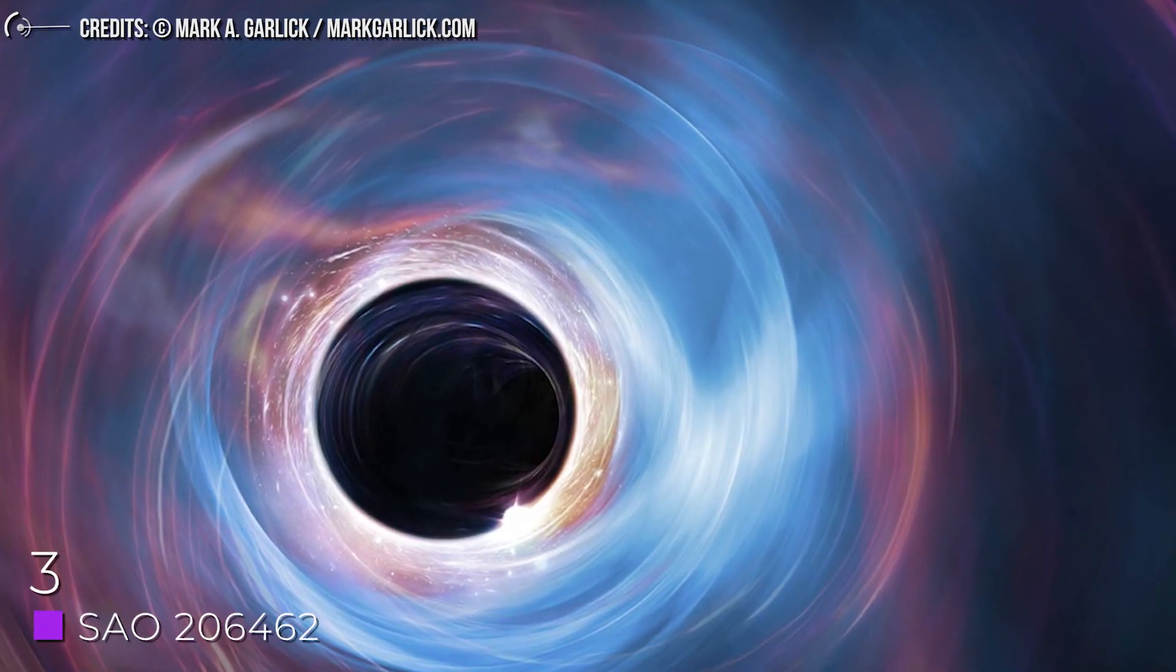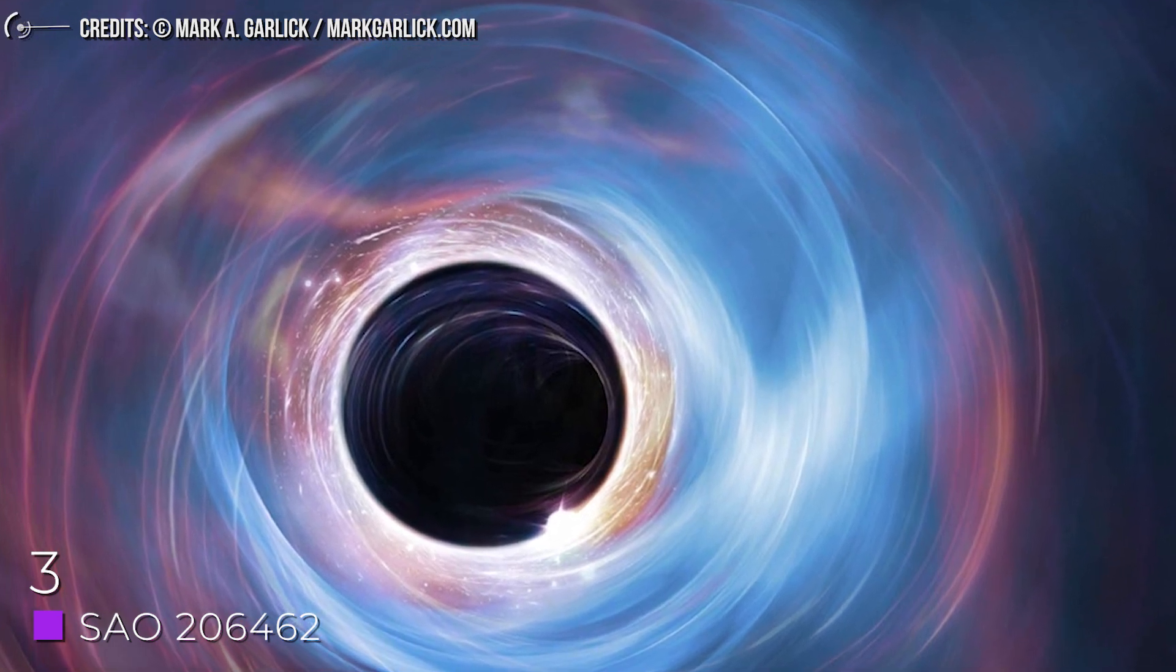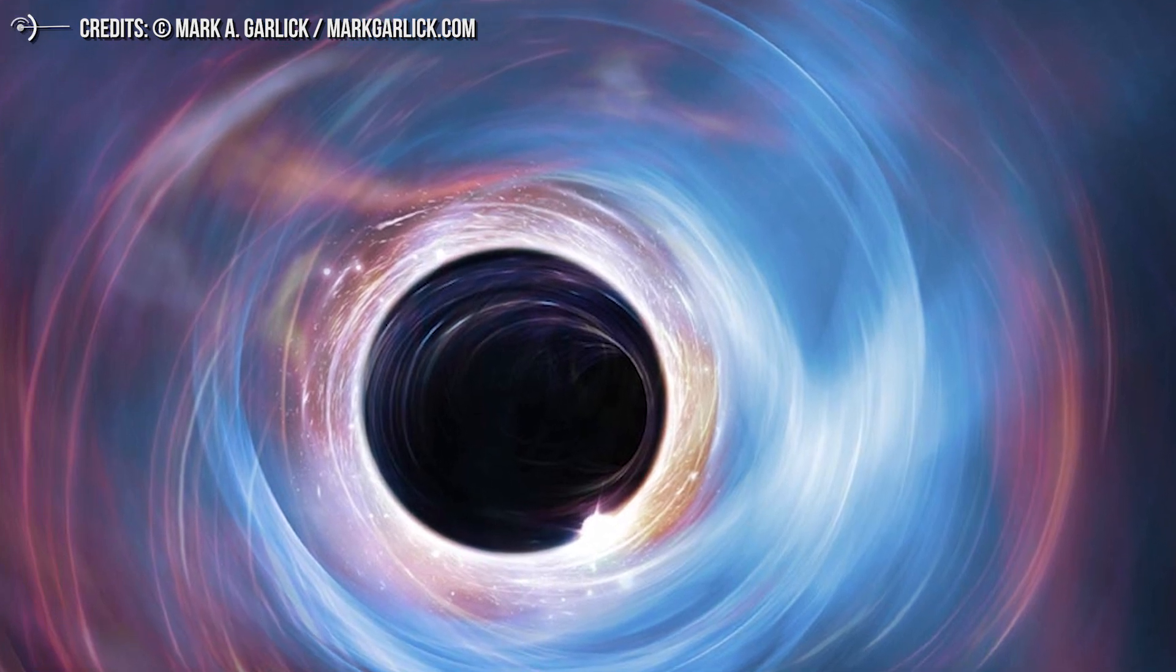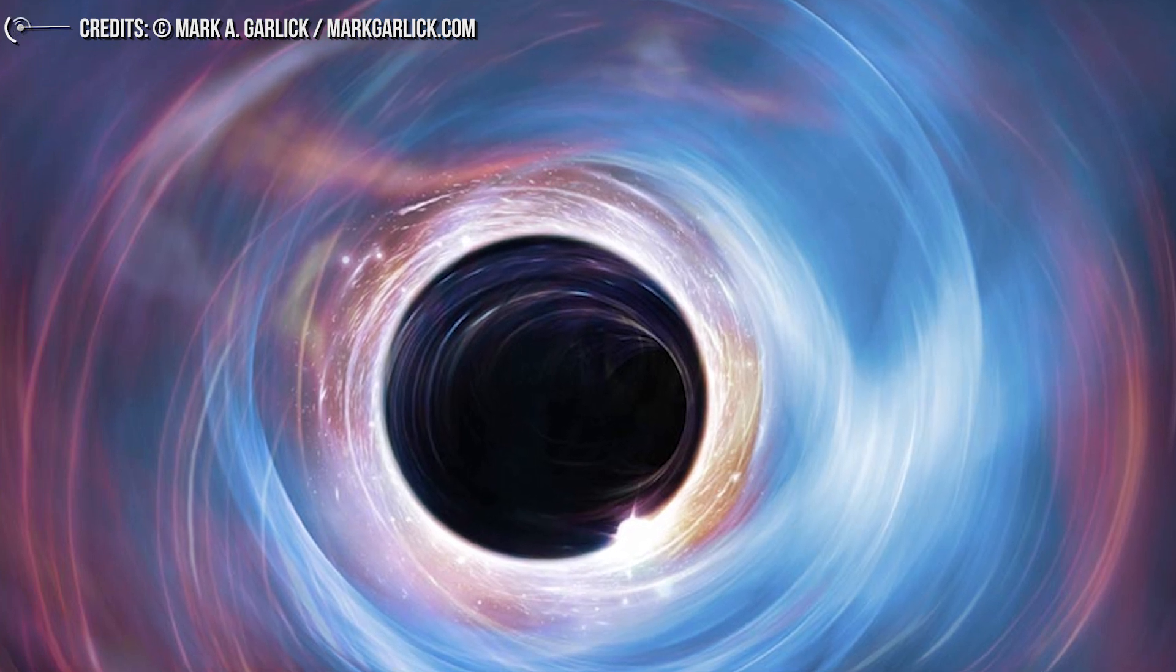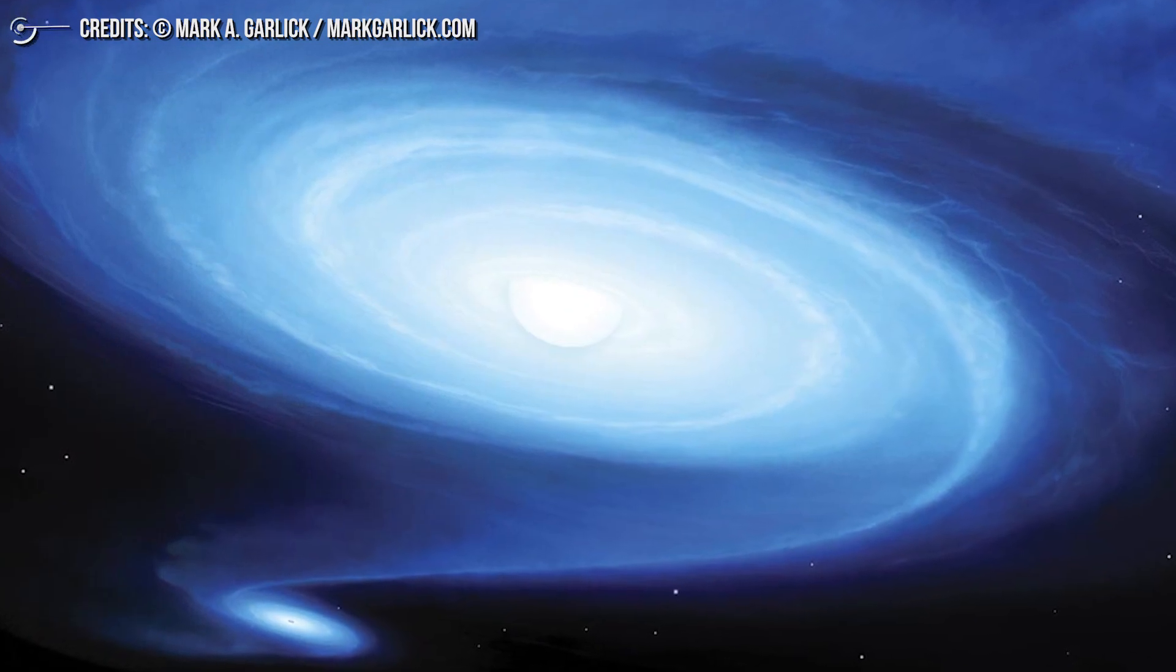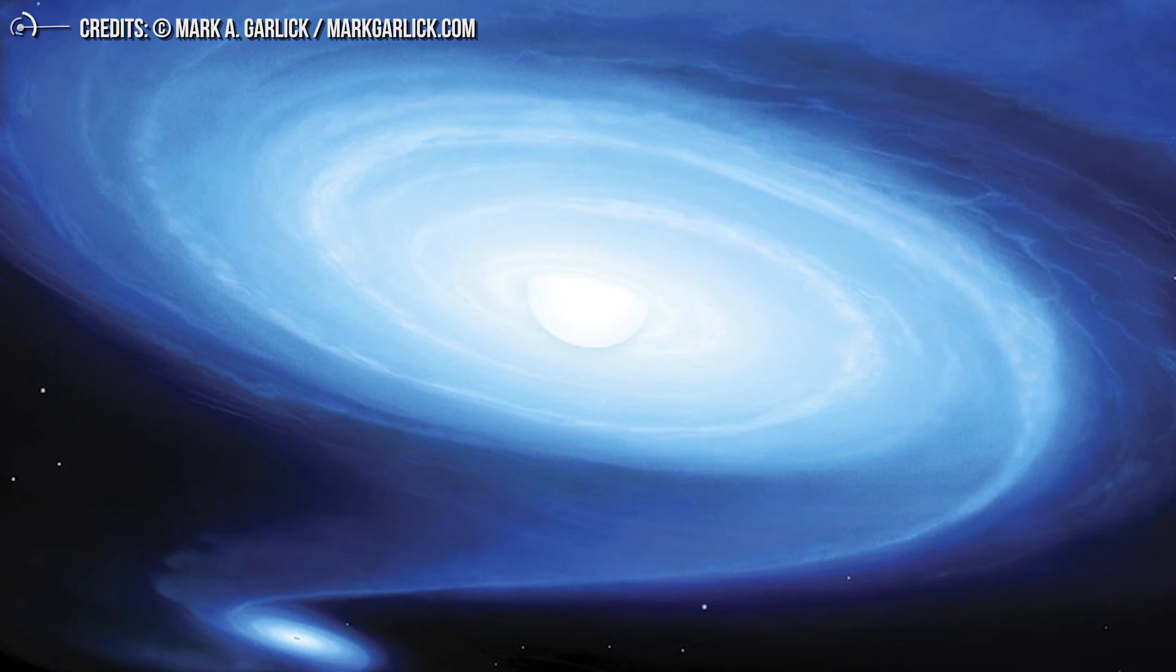Number 3: SAO 206462. We have just seen that Mira resembles a comet. What if I told you that there is a star that looks superficially like a spiral galaxy? In fact, it is a trait of SAO 206462. This is a very young star surrounded by a protoplanetary disk, which is not unusual for young stars still forming planets.